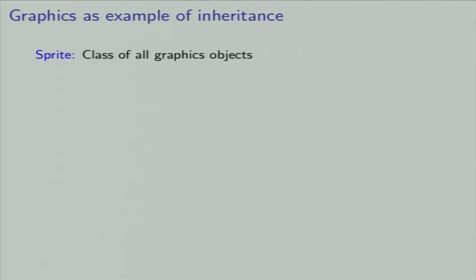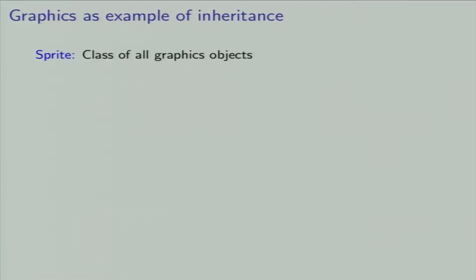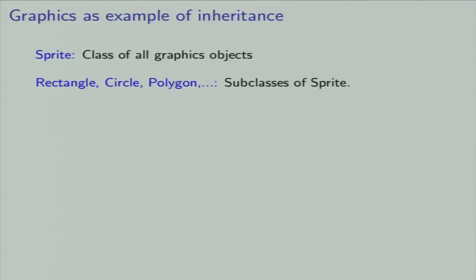Now I want to talk about other uses of graphics. The way this graphics has been implemented, you get the code so you can see how it has been implemented. When we are talking about inheritance during the course, we need good examples — and this graphic system itself is a good example. There is a base class called sprite, which is a superclass of all possible graphic objects. Rectangle, circle, and polygon are subclasses of sprite. Turtle itself is a subclass of polygon, and you can see that in the code.